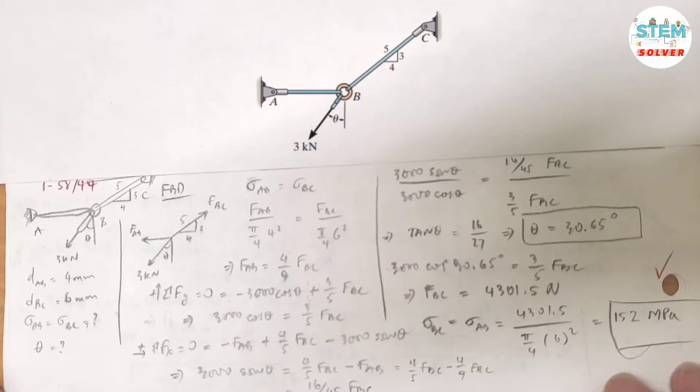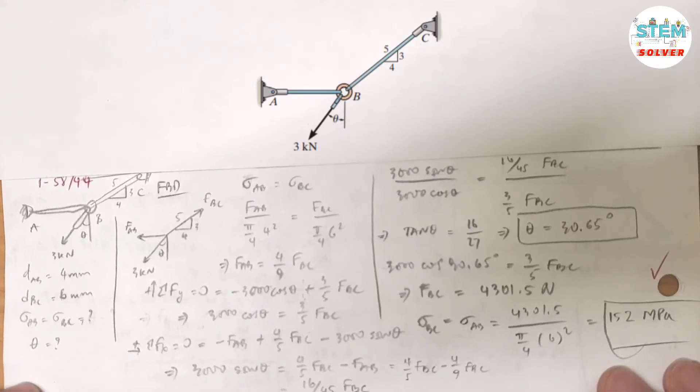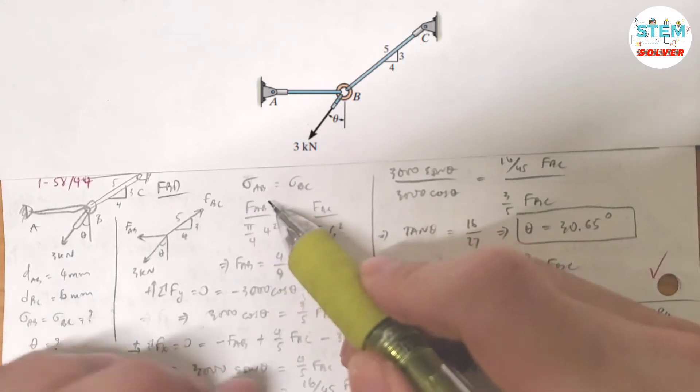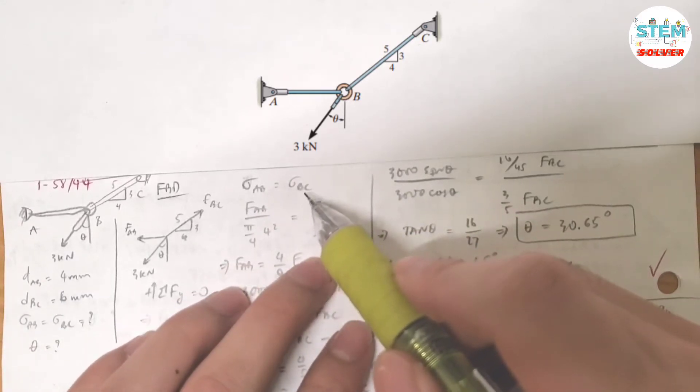The strategy is to use what you are given. What are you given? You're given normal stress in rod AB equals normal stress in rod BC. So we are going to start with that.